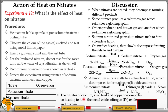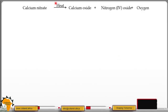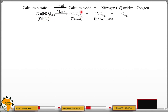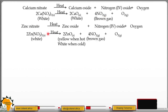The nitrates of calcium, zinc, lead, and copper decompose on heating to form the metal oxide, nitrogen dioxide (NO₂) which is a red-brown gas, and oxygen gas which rekindles a glowing splint. For zinc nitrate, you get zinc oxide — a white solid — plus nitrogen dioxide, a brown gas, and oxygen gas. You can identify this gas by its brown color, as it is the only gas with a brown color. Note that zinc oxide is yellow when hot and white when cold.